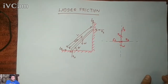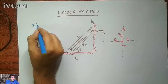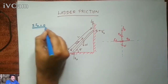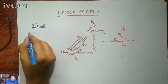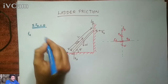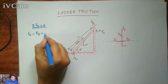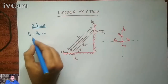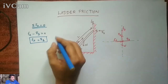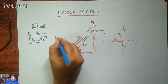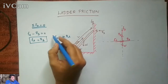Now let me solve this ladder problem using the free body diagram. Taking the sum of all horizontal forces equal to zero — the static equilibrium equation — we have F_A minus R_B equals zero, so F_A equals R_B. We know the general formula for frictional resistance: F_A equals mu times R_A.